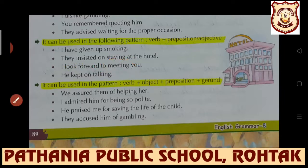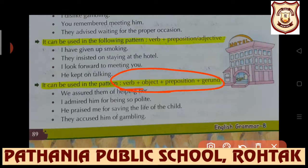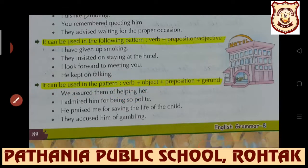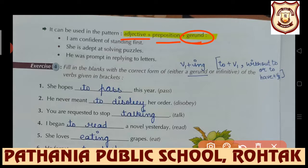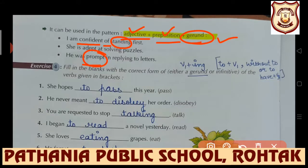Another pattern: verb plus object plus preposition plus gerund - 'We assured him of helping' - 'assured' is the verb, 'him' is the object, 'of' is the preposition, and 'helping' is the gerund. Next pattern: adjective plus preposition plus gerund - 'I am confident of standing first' - 'confident' is the adjective, 'of' is the preposition, and 'standing' is the gerund. 'He was prompt in replying to letters' - 'prompt' is the adjective, 'in' is the preposition, and 'replying' is the gerund.